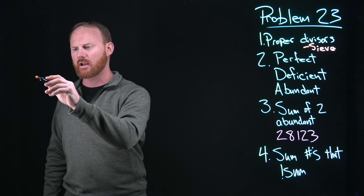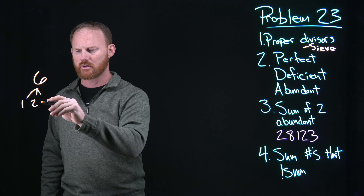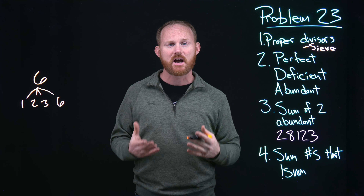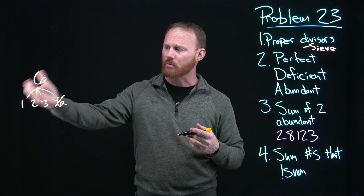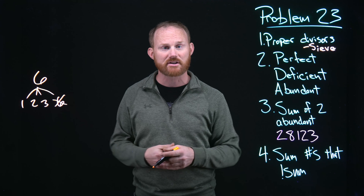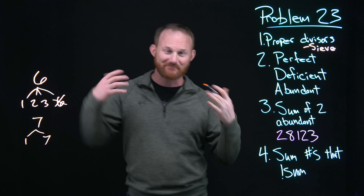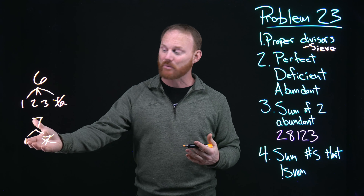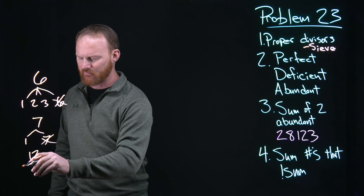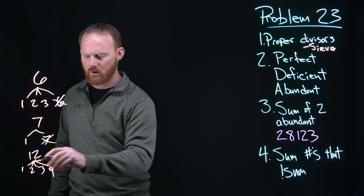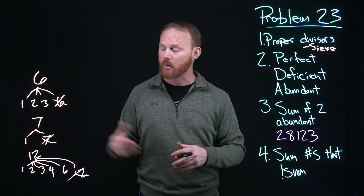Let's look at the number six. What are its divisors — what numbers go evenly into six? One, two, three, and six. Those are all the divisors of the number six. The proper divisors are the same list, but we get rid of the number itself. For the number seven, it's prime — it only has one and seven. As a proper divisor, we drop seven, so seven simply has one proper divisor. For the number twelve, the divisors are one, two, three, four, six, and twelve. Dropping twelve, the proper divisors are one, two, three, four, and six.